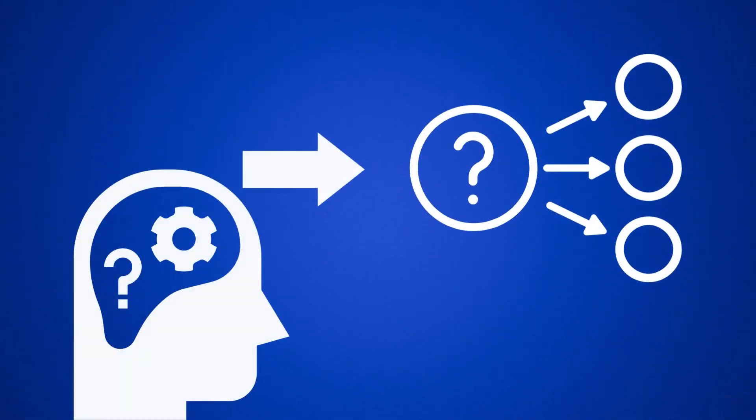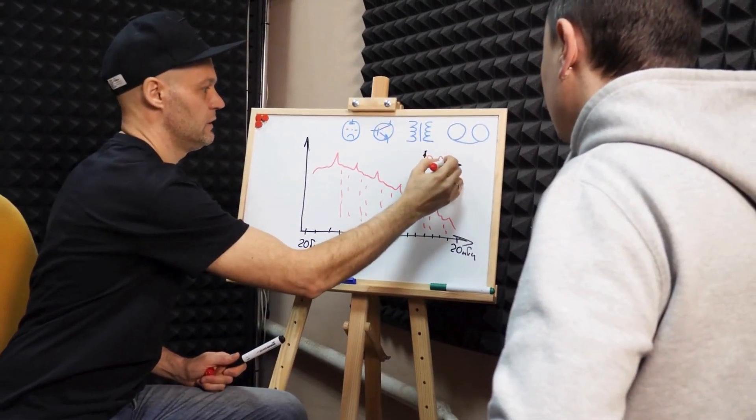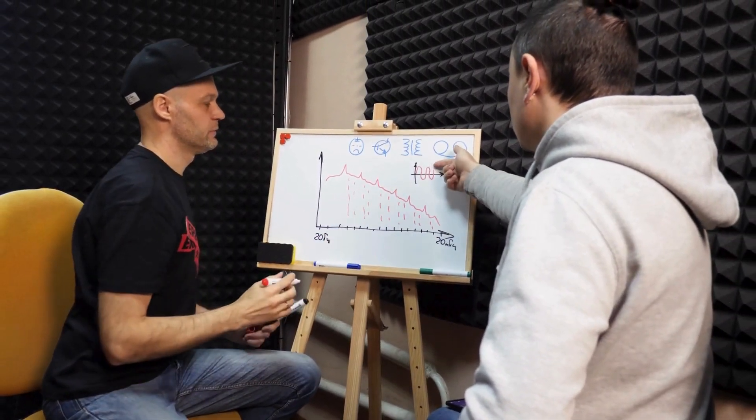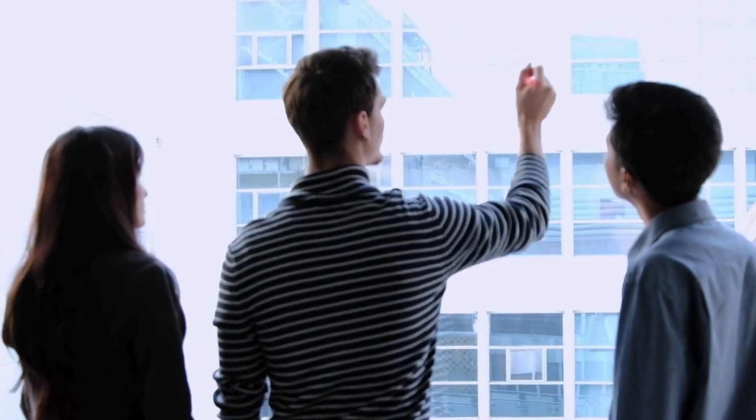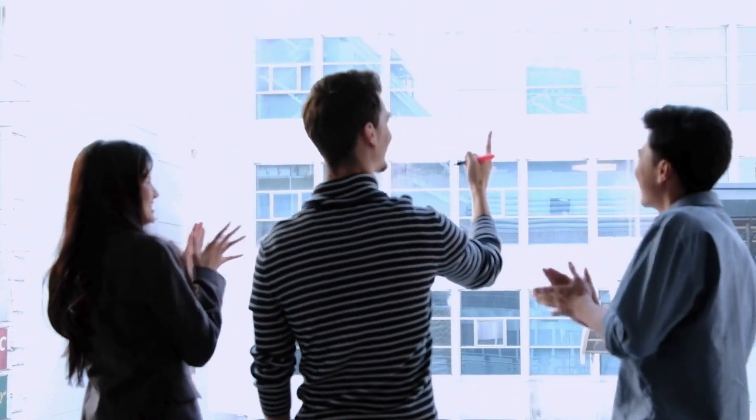The Feynman technique is effective for several reasons. Teaching a concept requires a deep understanding of it. This approach actively engages you with the material and forces you to break down the information into simple terms. When you attempt to teach a concept, you often discover areas where your understanding of concepts is weak. This process of teaching or explaining improves clarity and helps you identify and fill knowledge gaps.